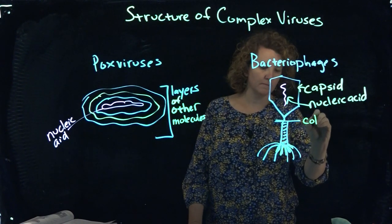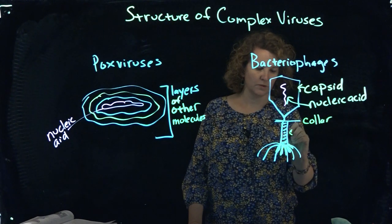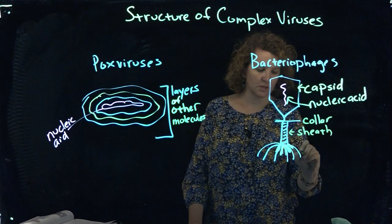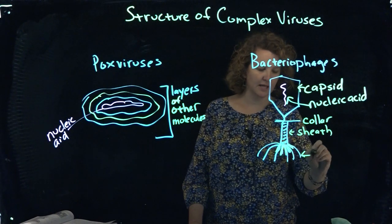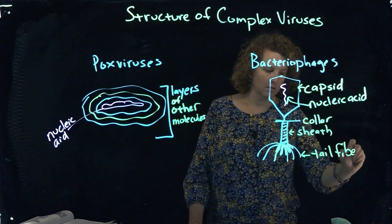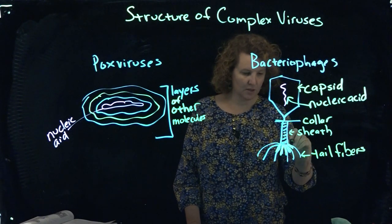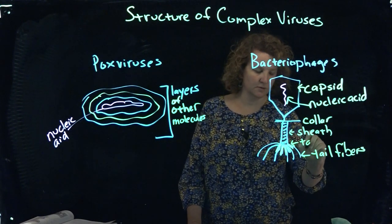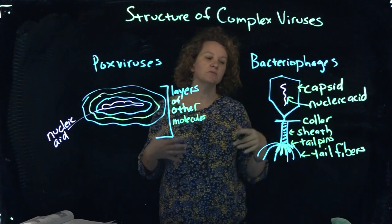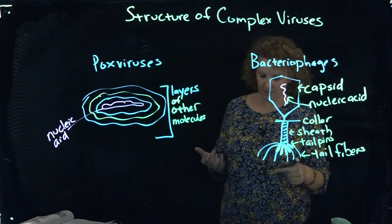So there's the collar, the sheath, the tail fibers, kind of the legs, and then finally the tail pins. So the top part really is what we're used to with the capsule with the nucleic acid inside.